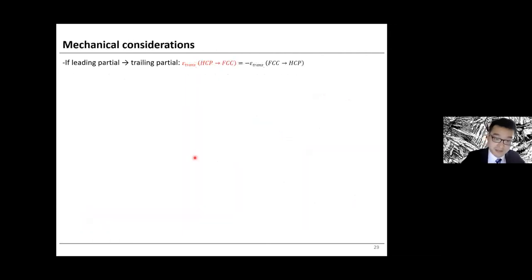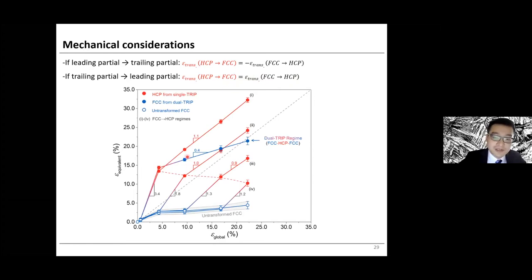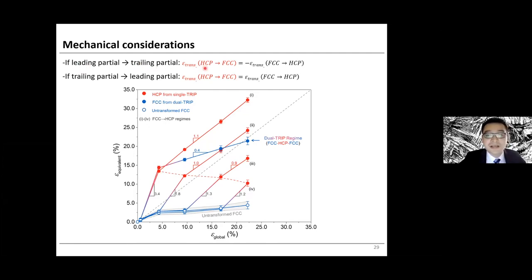From a mechanics consideration: if the leading partial moves to the trailing partial, the forward and reverse transformation strains should be exactly equal. If the trailing partial moves to the leading partial, the transformation strains are equal in absolute value. However, looking at our digital image correlation data, the transformation strain from HCP to final FCC is neither equal to the first transformation strain nor zero. This again shows the mono-partial emission model cannot explain the mechanics of the HCP-to-FCC transformation.